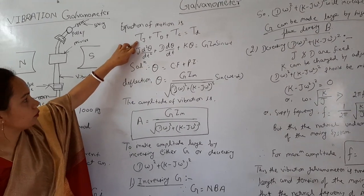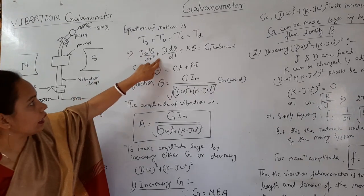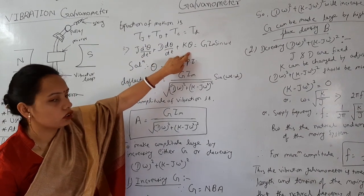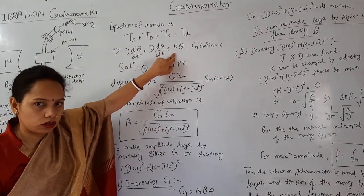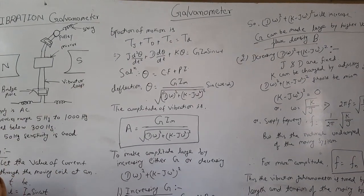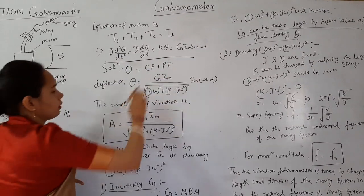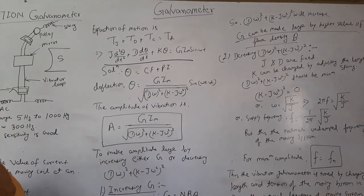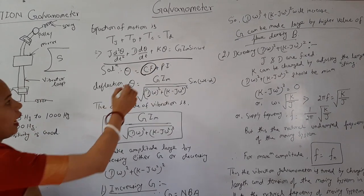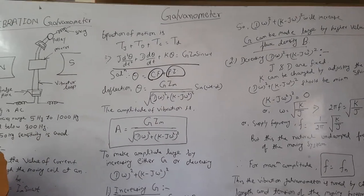So as you know, torque due to moment of inertia is J d²θ/dt² plus D dθ/dt (damping torque) plus Kθ (controlling torque). K is your controlling constant, D is your damping constant, and J is your inertia constant. So solution of this equation is of two parts: complementary function and particular integral. It can be solved by this method.